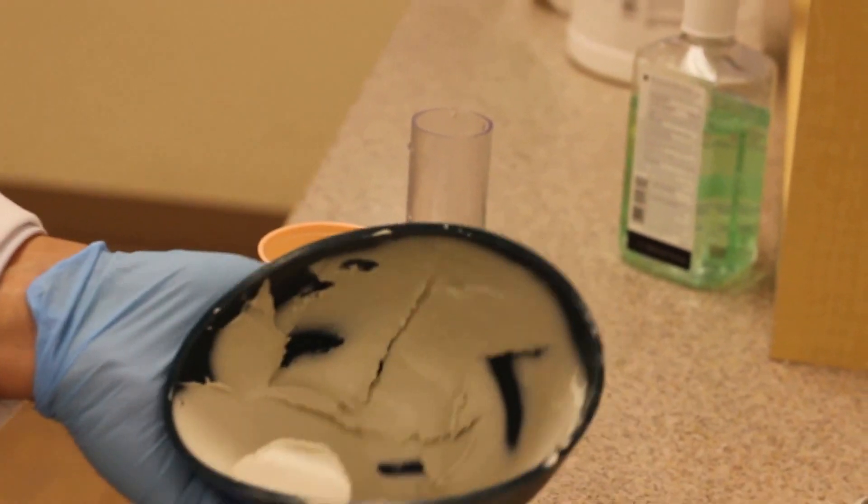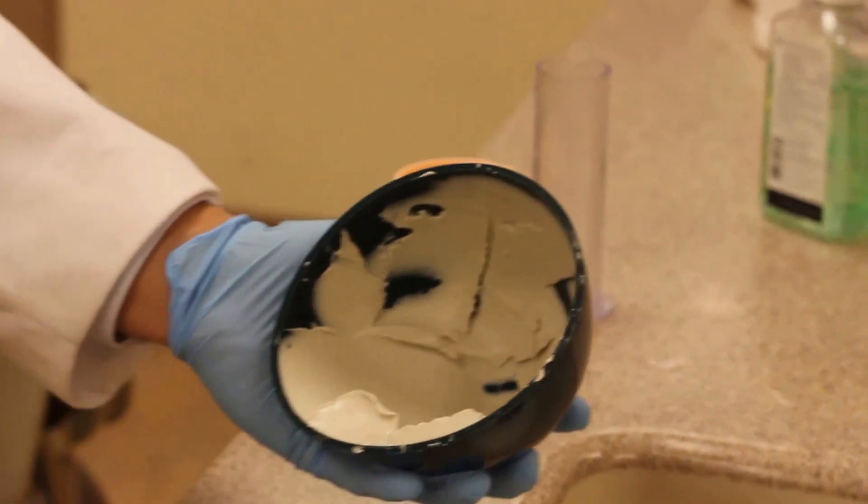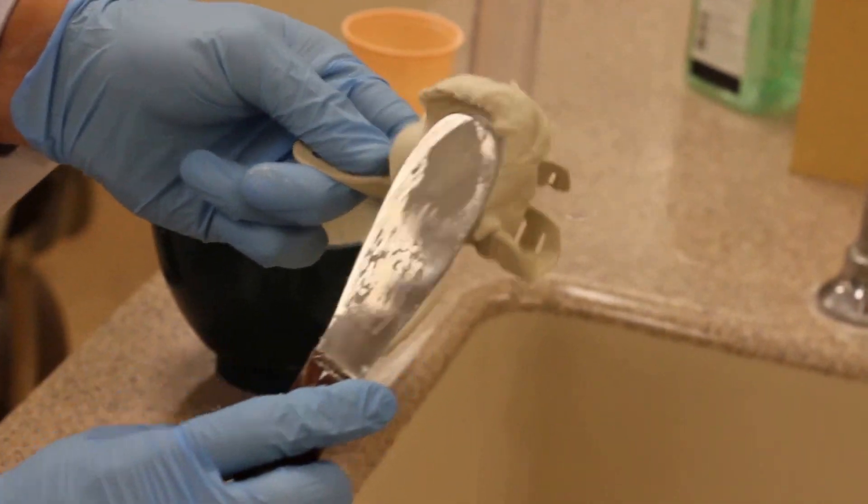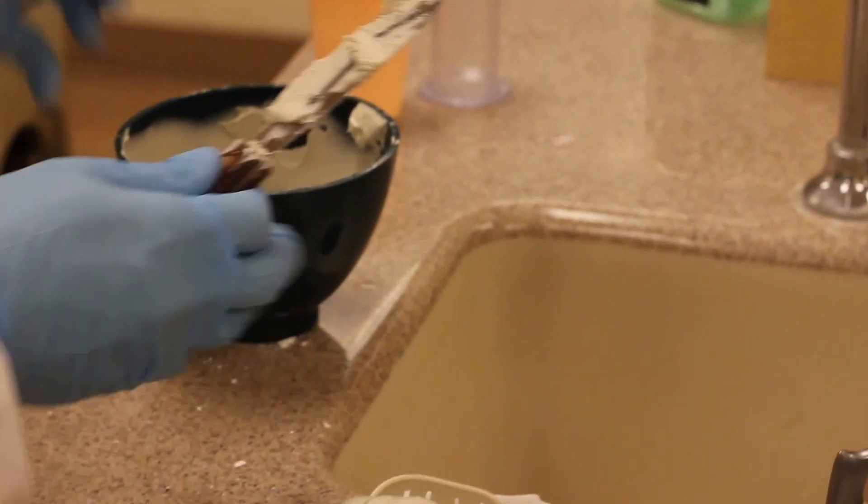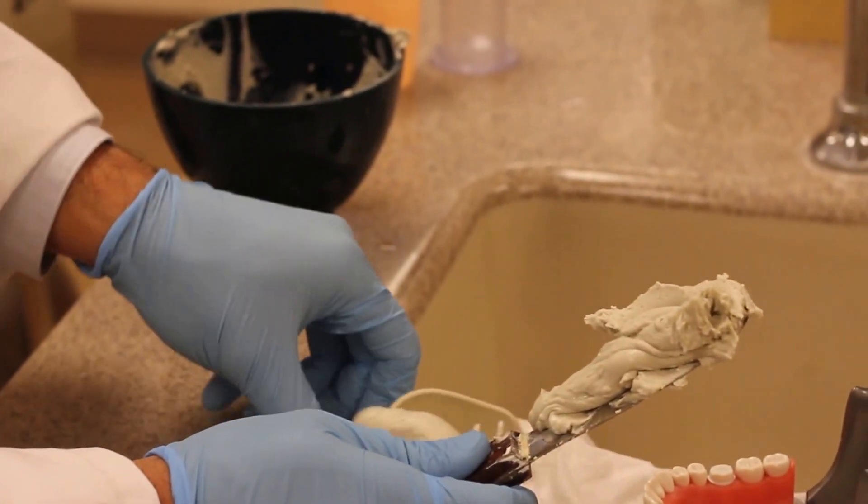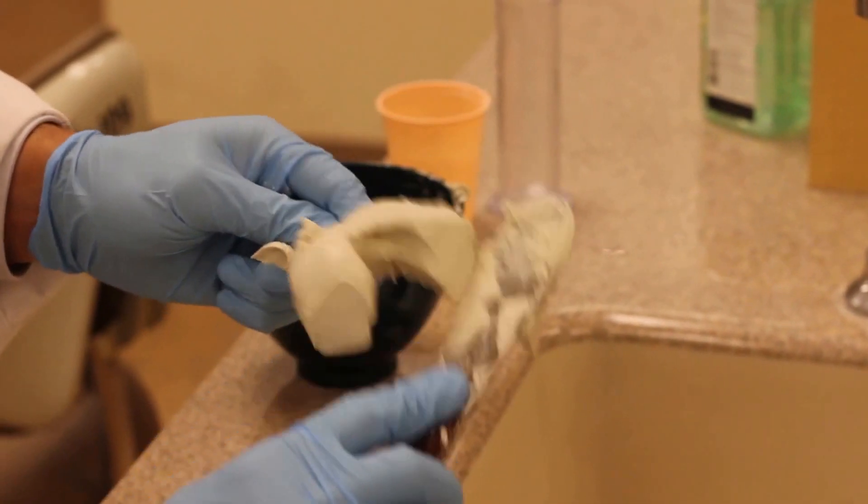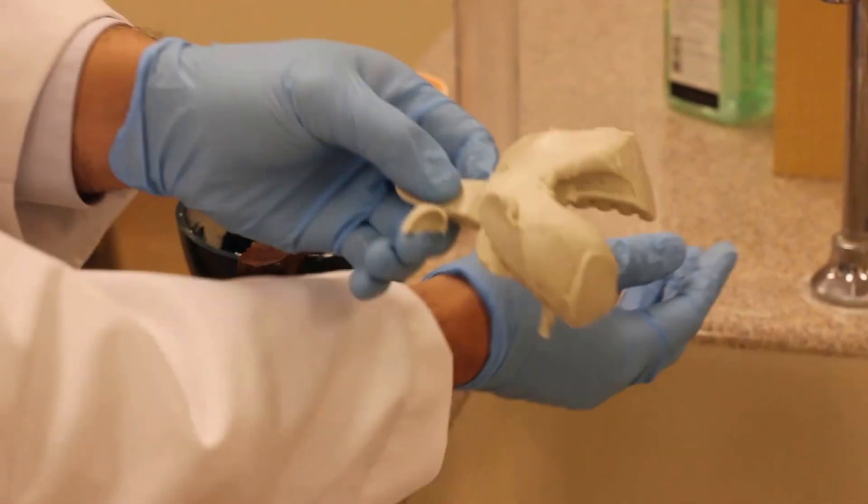And for the lower arch I'll generally pick up about half of the alginate, load it in half of the tray, come back for the other half, and load it in the other half.